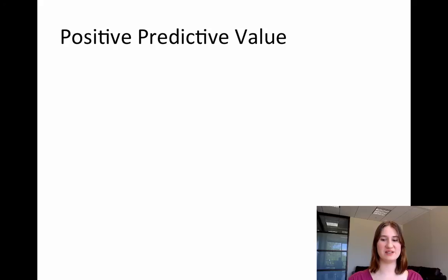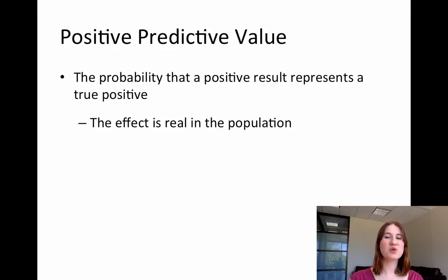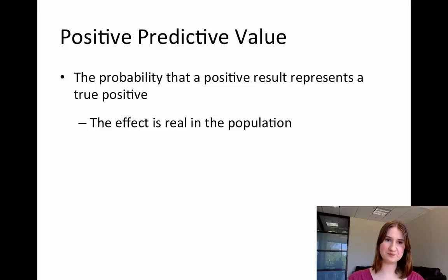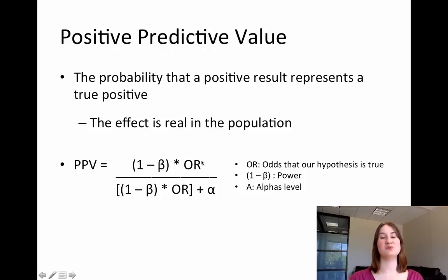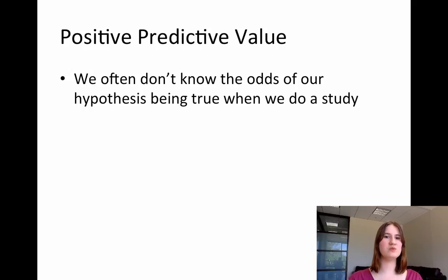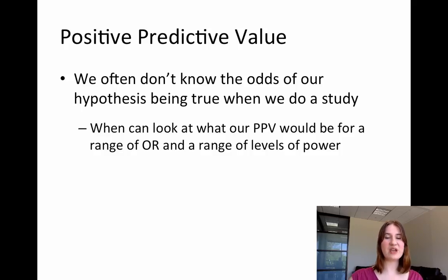The last thing I'm going to talk about is positive predictive value. The positive predictive value is the probability that a positive result — a statistically significant result — actually represents a true positive: if I get a significant result, is that effect really out there in the population? In the equation, 1 minus beta is the statistical power, alpha is typically set to 0.05, and OR is the odds ratio — the odds that my hypothesis was true before I ever did my study. We can look at the positive predictive value for a range of odds ratios and see how power affects it across those ranges.